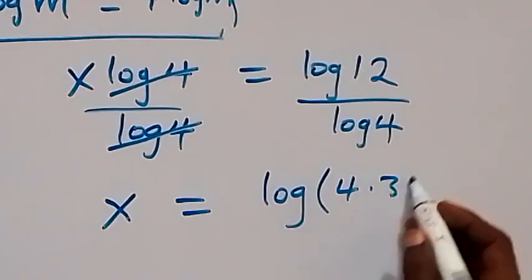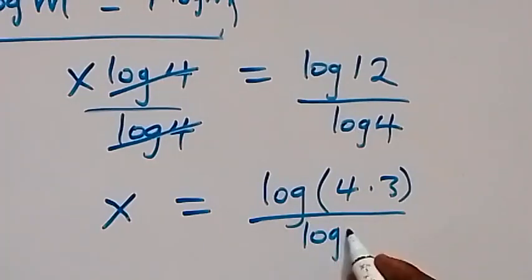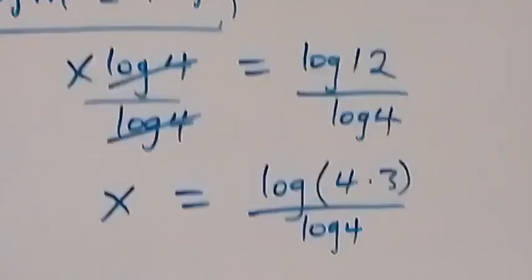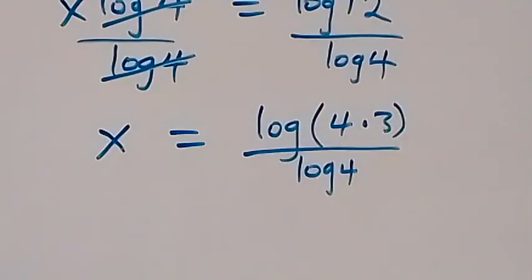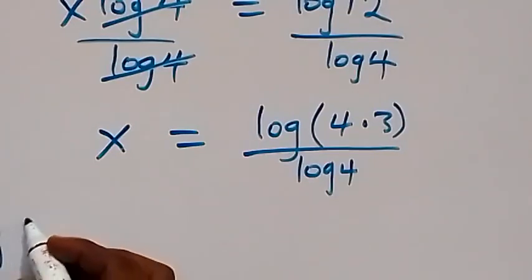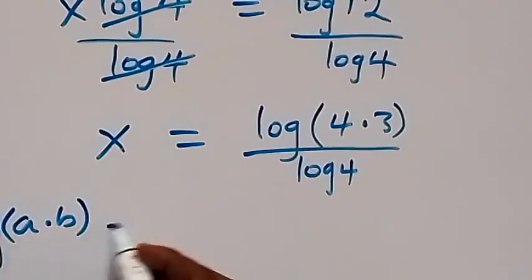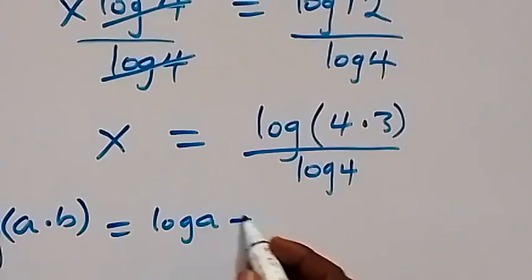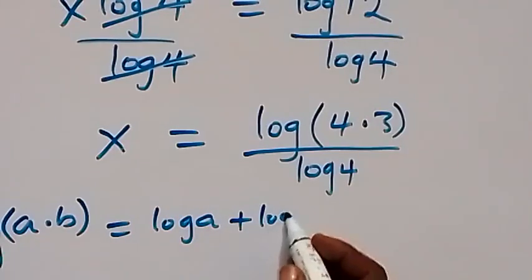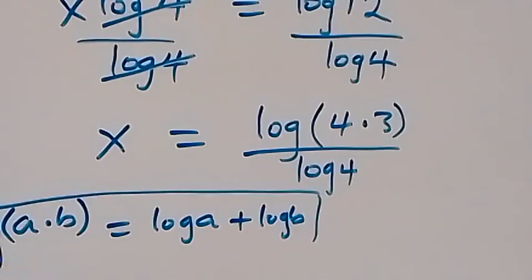We can write log 12 as log of 4 times 3, that's 12, over log 4. Then from the product law of logarithms, when we have the log of a product of two numbers, we can write log(a × b) as log a plus log b, and separate it into the sum of two logs. So when we apply this here...